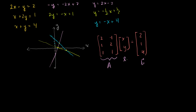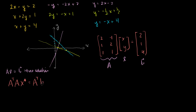We can almost get there by finding a least squares solution. We find a least squares solution by multiplying both sides by A transpose: A transpose times A times our least squares solution equals A transpose times b. So let's find the vector x-star that is our least squares solution. What is A transpose times A?